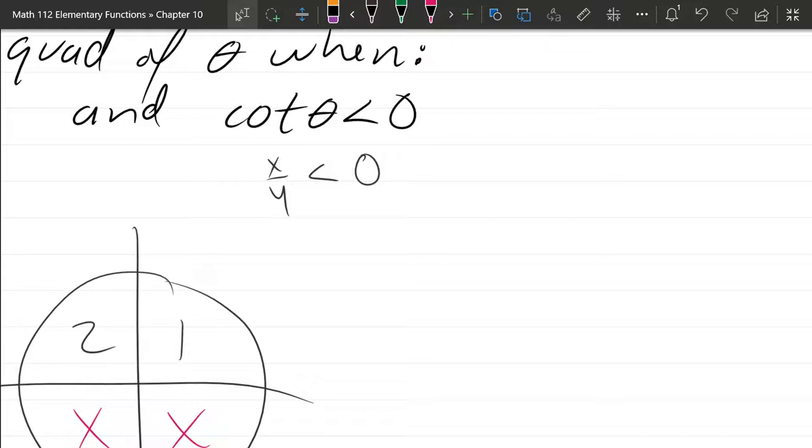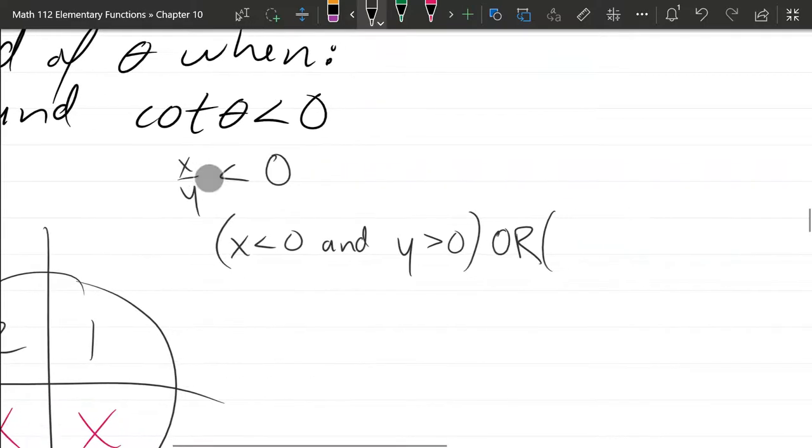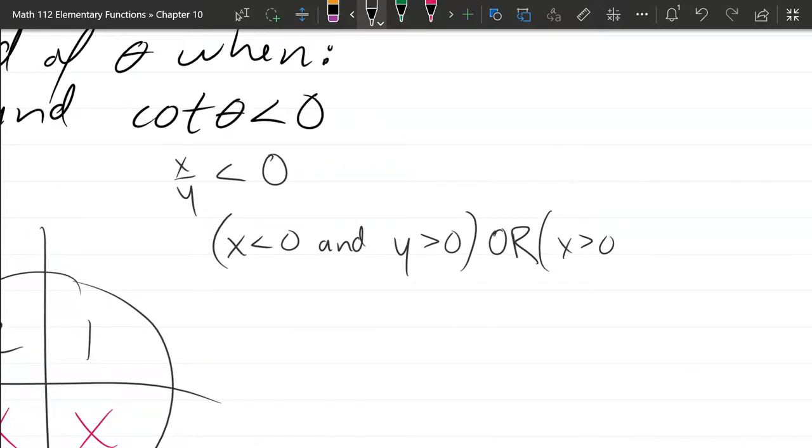So there's two possibilities to make a quotient negative. x is negative and y is positive, or x is positive and y is negative.